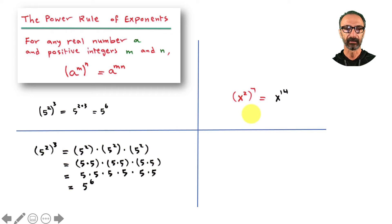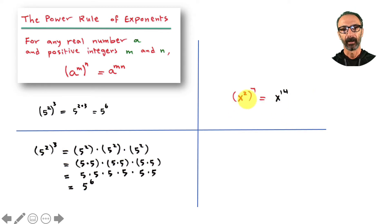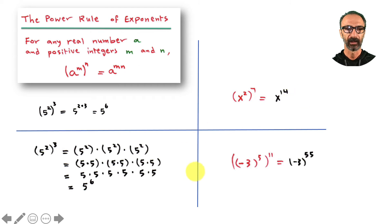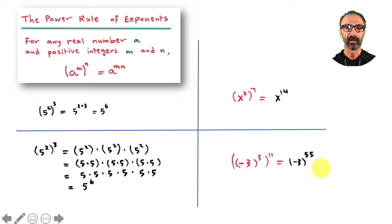Let's do some quick examples. Multiply two times seven — that's the exponent — and we're done. Another one: five times eleven gives negative three to the power 55.